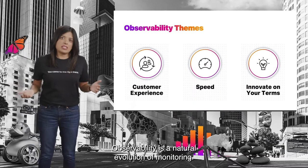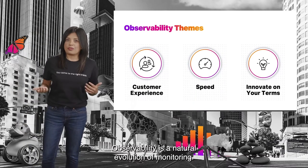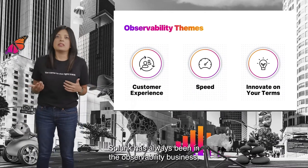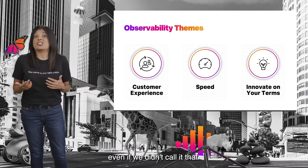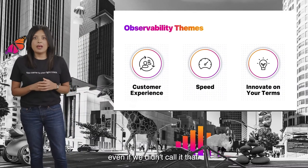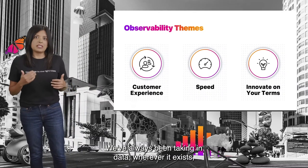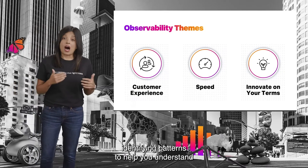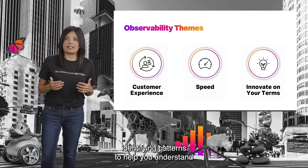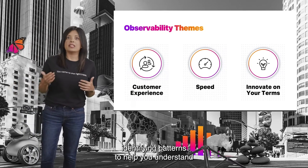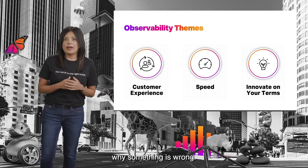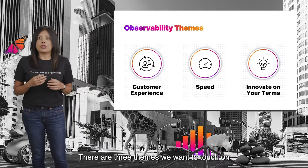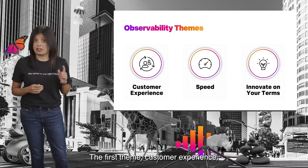Observability is a natural evolution of monitoring. Splunk has always been in the observability business, even if we didn't call it that. We've always been taking in data wherever it exists, identifying patterns to help you understand why something is wrong. There are three themes we want to touch on for observability.